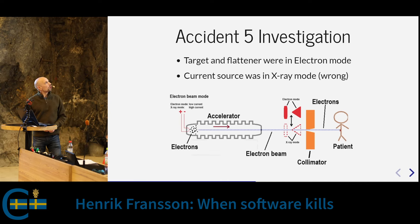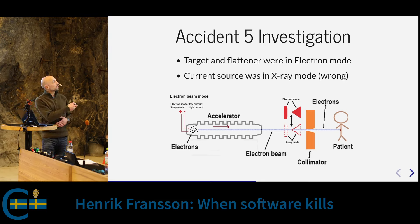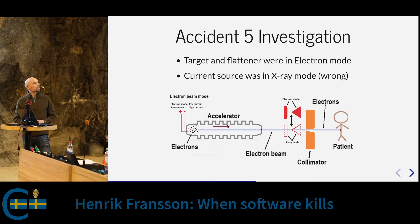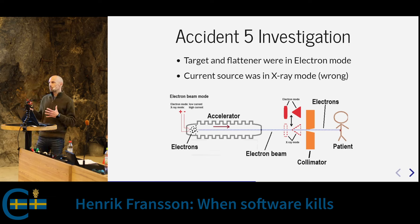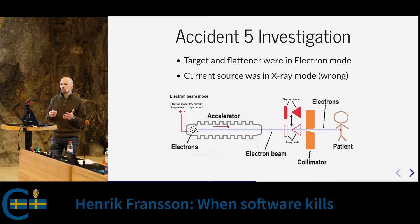Going back to the linear accelerator: the metal parts were out of the beam's path, but due to the race condition the electron gun current was set to the high setting instead of the required low setting — a hundred times too high. This happened because the move was not instantaneous and the subroutines used shared variables between them with no protection or thread safety implemented in the software.